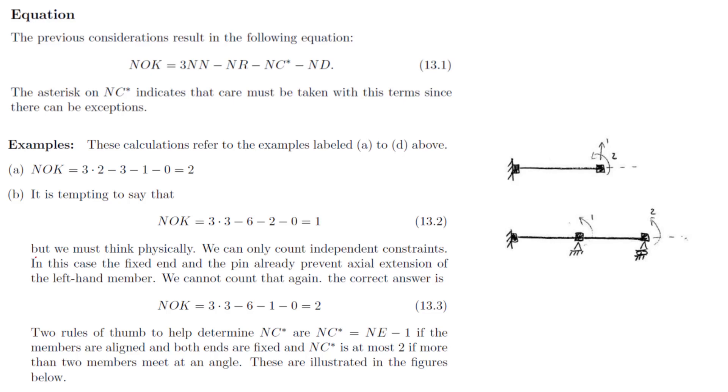What we've covered previously allows us to write an equation for NOK. NOK equals 3 times the number of nodes minus the number of restraints minus the number of constraints minus the number of reductions. We write NC, number of constraints, with a star to indicate that we have to be careful with this term since there can be exceptions in its use.